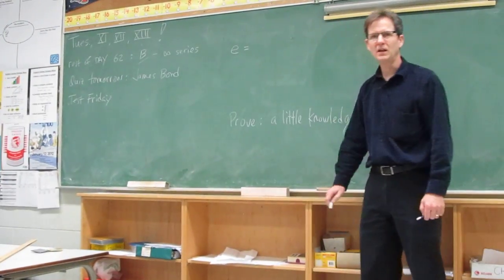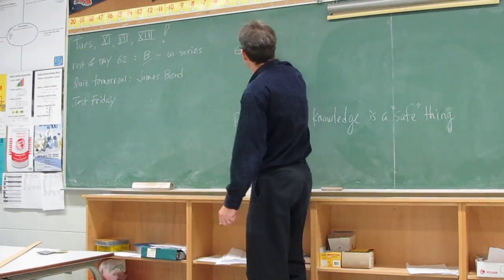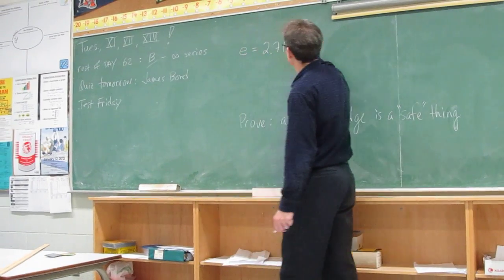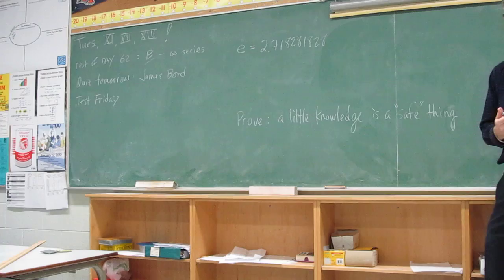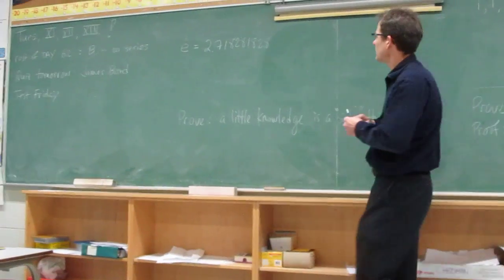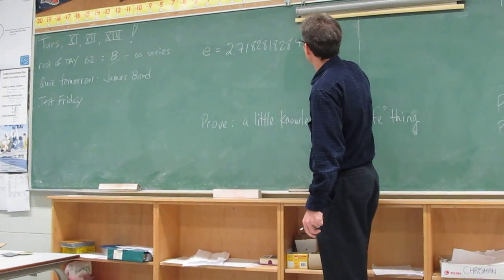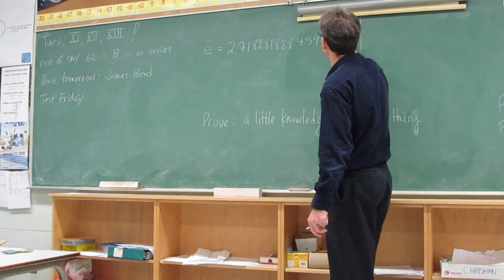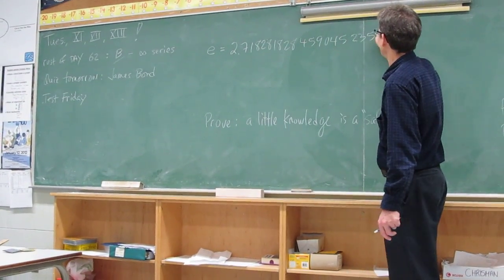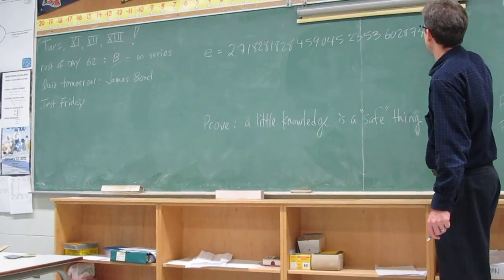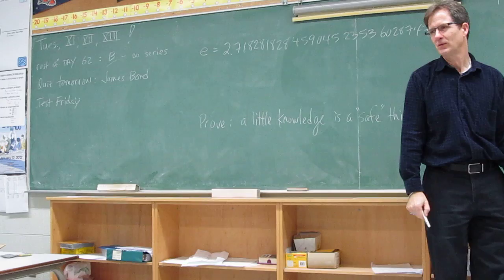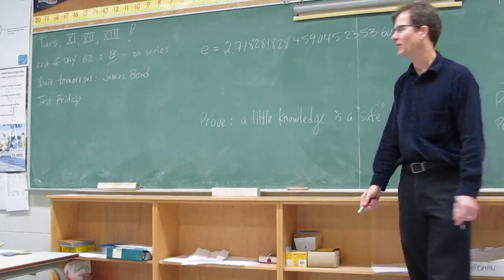So the number E is 2.718281828, and then just when you think it's going to repeat, it doesn't. It goes 45904523536028747. And I believe that's the end of the first row on the E. Okay, second row.